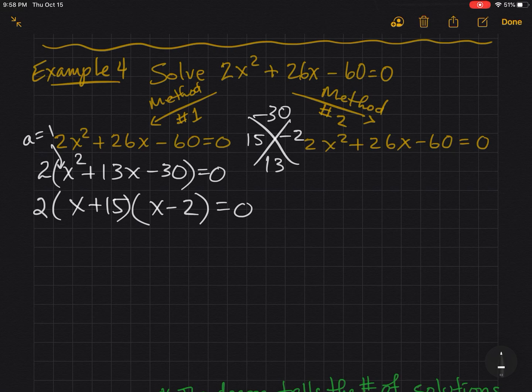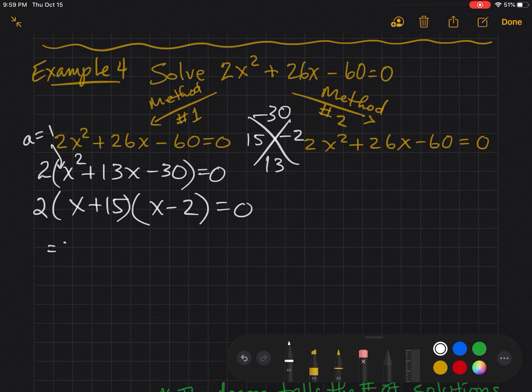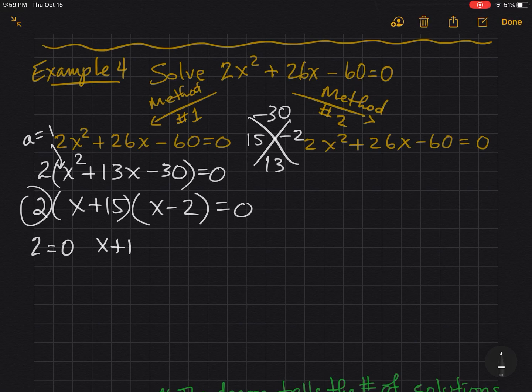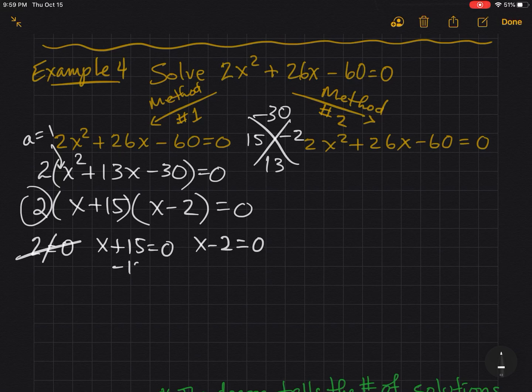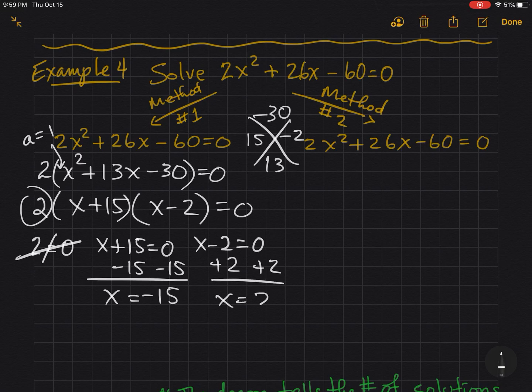Using the zero product property, I see 2 equals 0. I see x plus 15 equals 0. And I see x minus 2 equals 0. Well, the first equation doesn't make much sense, so you can pretty much ignore it. And now, using my zero product property, getting x by itself, I see x equals negative 15. I see x equals 2. So, I have two solutions.